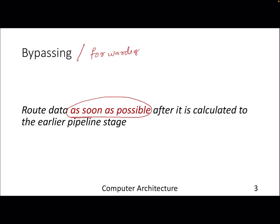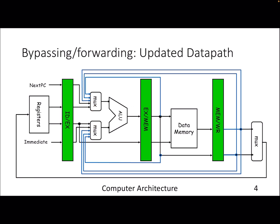For example, our writes actually happen in the fifth stage, the write-back stage. But at the end of the ALU stage, we already know the result that has to be written into the register. So why not propagate that value directly to the input of the ALU? To understand this more concretely: we are talking about a data hazard. This is our write-back stage, this is our memory stage, this is our execute stage, and this is fetch and decode.